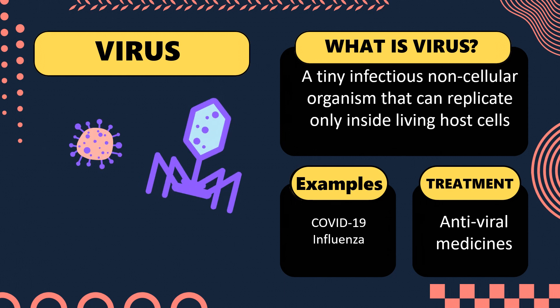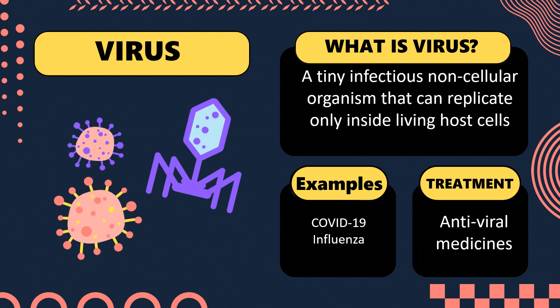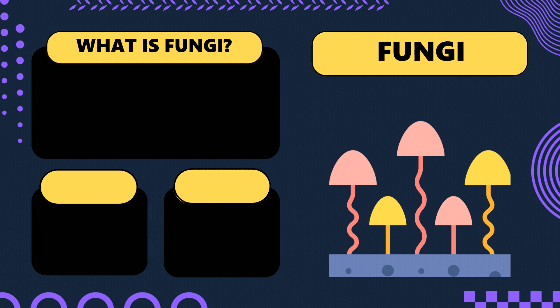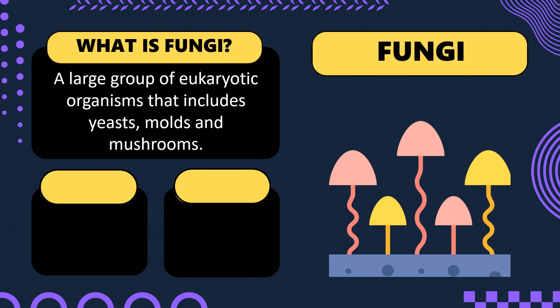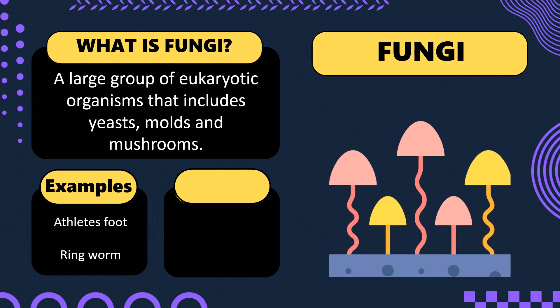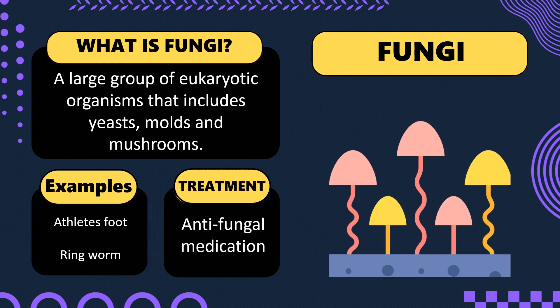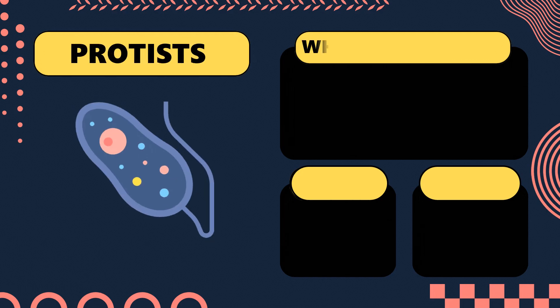The treatment for viral diseases includes antiviral medicines. The next pathogen is fungi. Fungi are a large group of eukaryotic organisms that include yeasts, molds, and mushrooms. Examples of diseases caused by fungi include athlete's foot and ringworm. The treatment includes antifungal medicines.